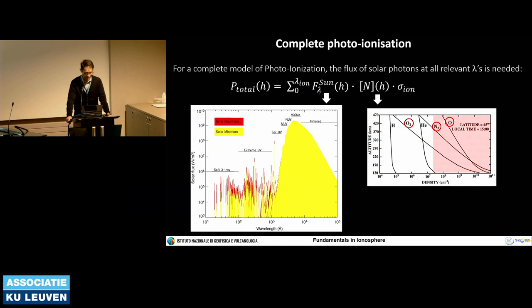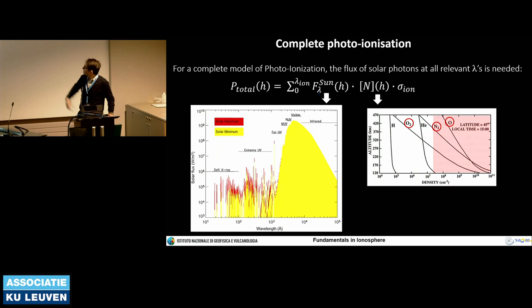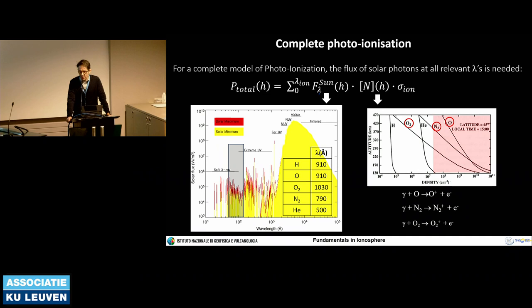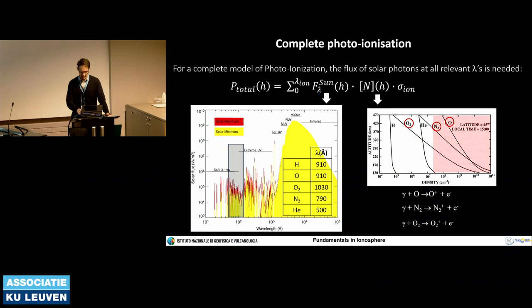For a complete picture of photo-ionization, we have to take into account the full solar irradiance and the full density of various species as a function of altitude — the composition of the neutral atmosphere. The solar flux shown across various wavelengths is reported for two levels of solar activity: solar maximum and solar minimum. The range of wavelengths creating ionization in the upper layers of the ionosphere spans from X-rays to EUV rays. These are the main sources of primary ionization in the ionosphere.